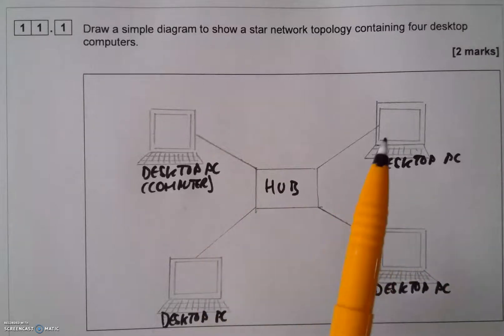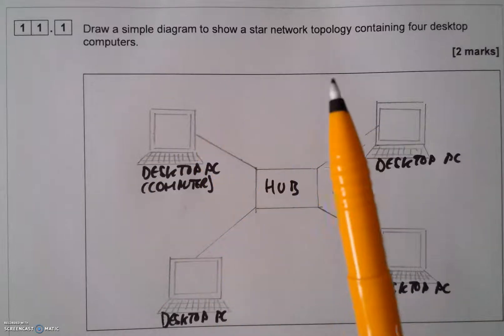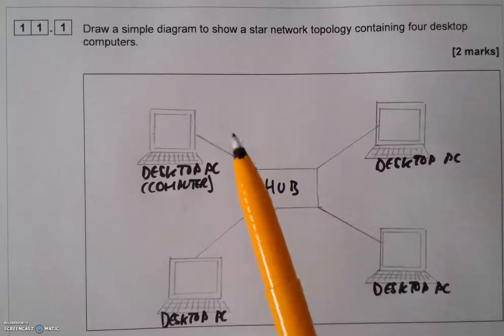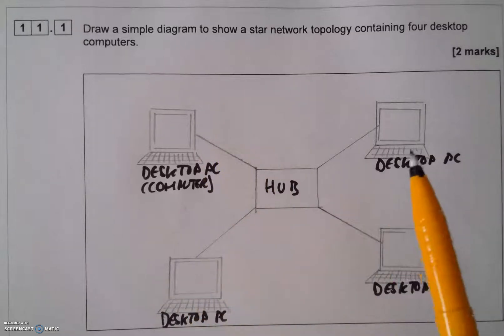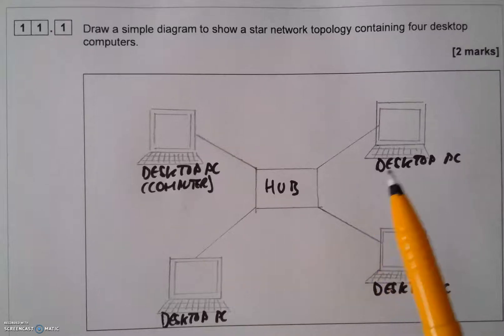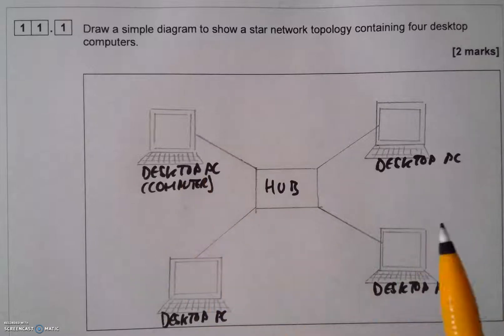So I've got one, two, three, four desktop computers. That should be really clear to the examiner. So draw a simple diagram to show a star network topology containing four desktop computers. As long as I've got the hub there and I've got the connections, I've not been asked to put a printer on there or show a connection to a server. I've just got my star network and you can see it looks like a star shape, and I've got my four desktop computers connected to it.